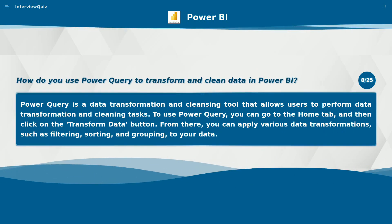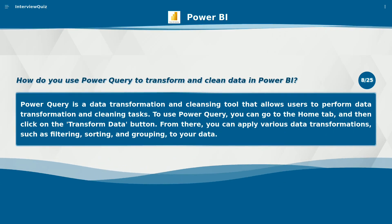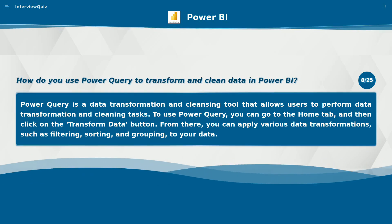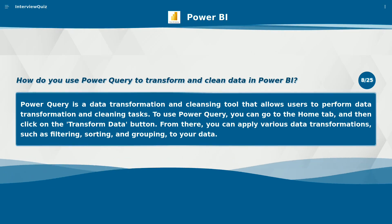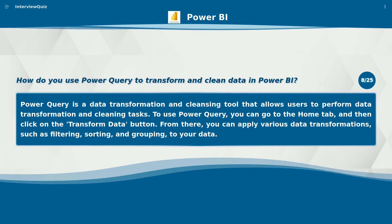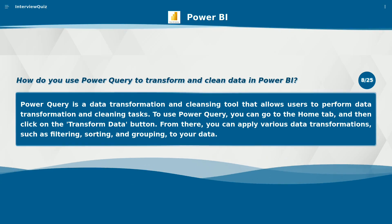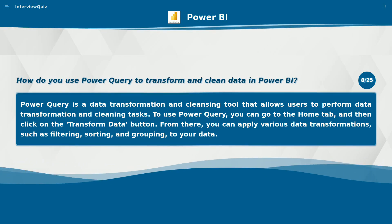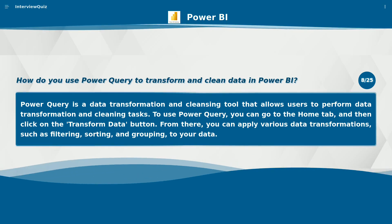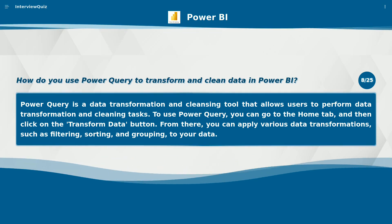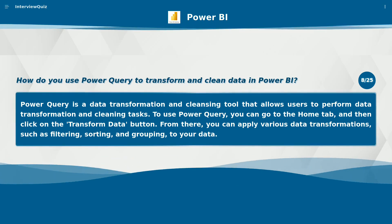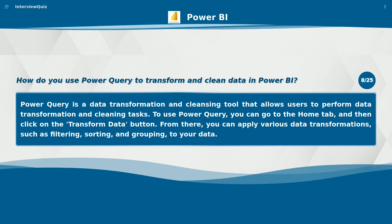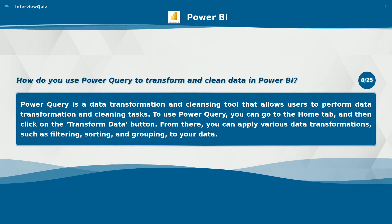How do you use Power Query to transform and clean data in Power BI? Power Query is a data transformation and cleansing tool that allows users to perform data transformation and cleaning tasks. To use Power Query, you can go to the Home tab and then click on the Transform Data button. From there, you can apply various data transformations, such as filtering, sorting, and grouping, to your data.